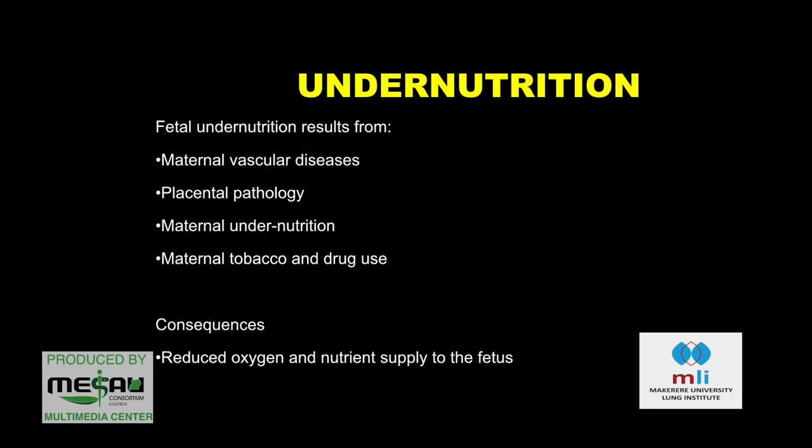I'll talk about undernutrition of the fetus. Several factors influence the nutrition of the fetus: if the mother has vascular disease — preeclampsia and eclampsia — if there is placental pathology, if the mother is undernourished, or if the mother is using tobacco or any other drug. What happens in that kind of undernutrition is reduced oxygen and nutrient supply to the fetus, ending up with a child who has intrauterine growth retardation and poor lung function.